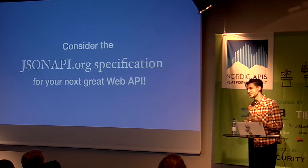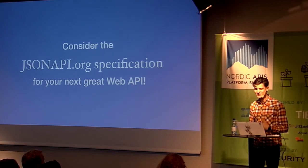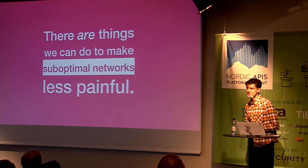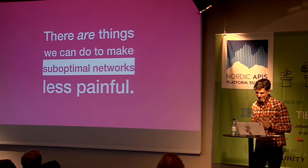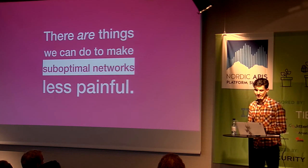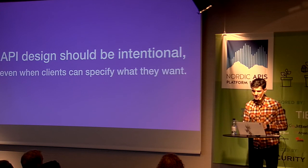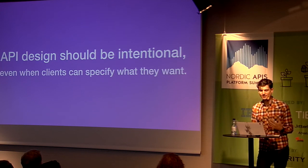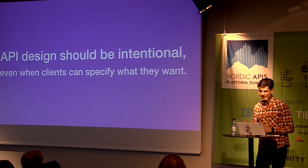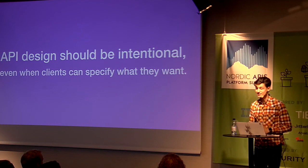In conclusion, I hope I've convinced you to at least consider JSON API for your next web API. I do think GraphQL is an advancement in API design, but I think the jsonapi.org specification addresses the concerns of client developers much better. I hope I've convinced you that making suboptimal networks less painful for client developers is something API design styles can help with, and that designing data models with intent and study of client needs is not a step that can be skipped.